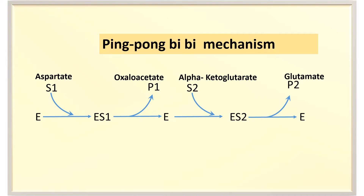Instead of aspartate, you can also use alanine as the entering substrate. If alanine enters, pyruvate is formed and alpha-ketoglutarate is converted to glutamate.